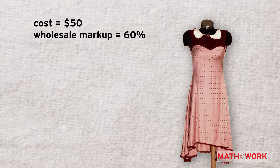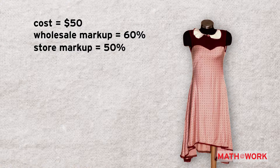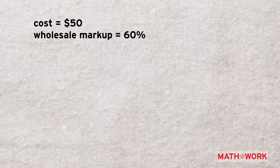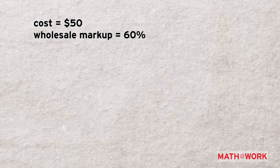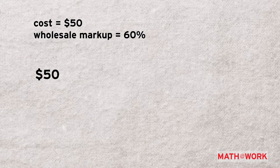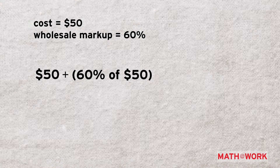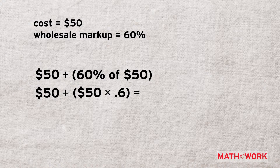In order to get this dress in stores, we'll need to find the final sale price in two steps. First, we'll find the wholesale price with the 60% markup based on the $50 it cost Jesselyn to make the dress. And then we'll find the store price with a markup of 50%. To do this, we can add the price the dress costs to make — $50 — plus the 60% markup, that is 60% of $50, or 50 times 6 tenths.